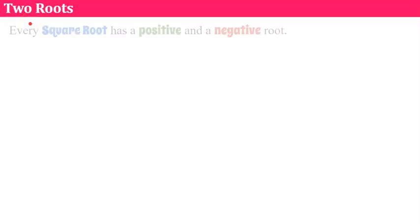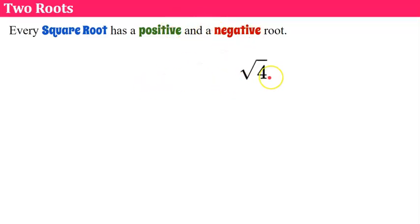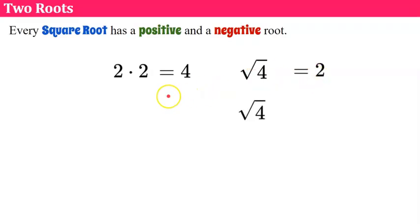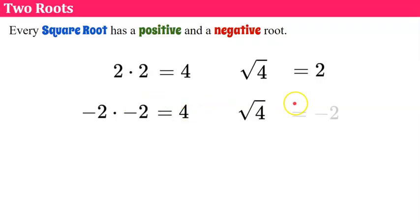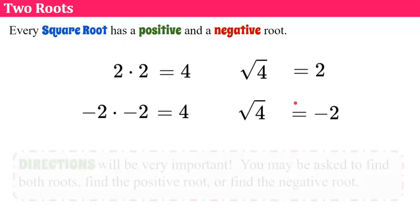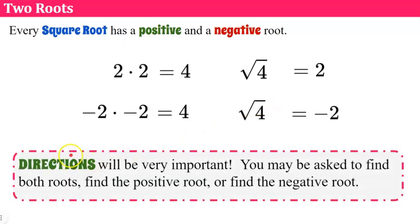Every square root has a positive and a negative root. The square root of four is two, because two times two equals four. However, the square root of four can also be negative two, since negative two times negative two is positive four — a negative multiplied by a negative is a positive. Be careful with your directions: you may be asked to find both roots, just the positive root, or just the negative root.